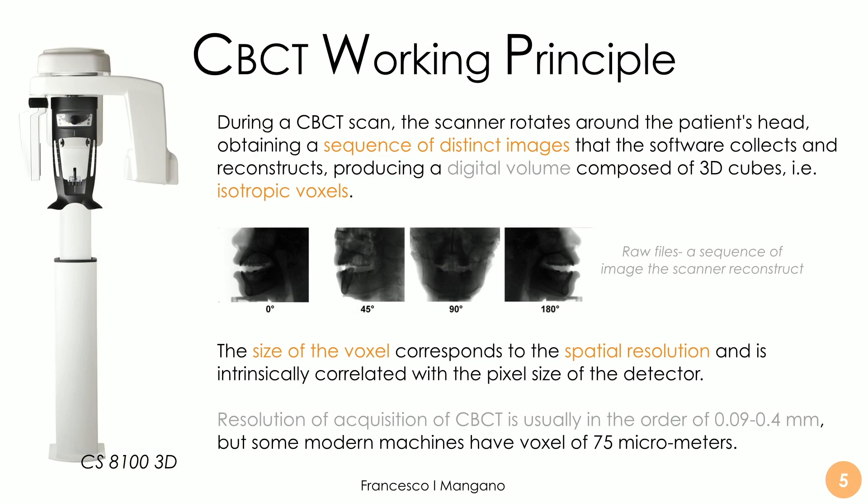During a CBCT scan, the scanner rotates around the patient's head, obtaining a sequence of distinct images. The software collects all these images and reconstructs them, producing a digital volume composed of 3D cubes called isotropic voxels. The size of the voxels basically corresponds to the spatial resolution, and it is intrinsically related to the pixel size of the detector.